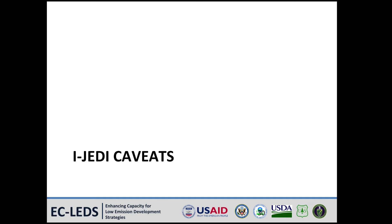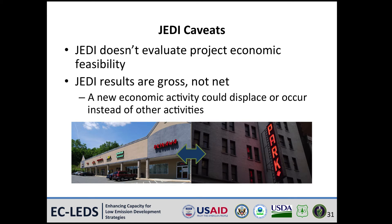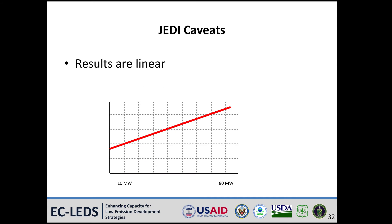Now let's discuss some important caveats. First, iJEDI doesn't evaluate project economic feasibility — the model won't tell you whether the project will make money. Second, JEDI results are gross: new economic activity can displace other activities. For example, a worker at a wind power plant may have worked at a car manufacturer in the absence of the wind power plant. Third, iJEDI results are linear — the impact per watt of a big plant will differ from a small plant because of economies of scale, and iJEDI does not currently take this into consideration. For example, 100 one-megawatt projects or one 100-megawatt project will give you the same JEDI results.